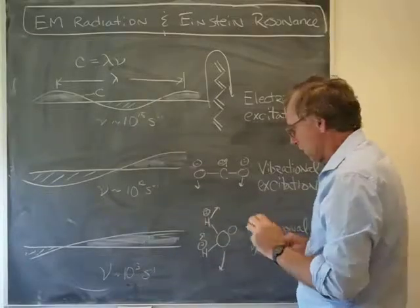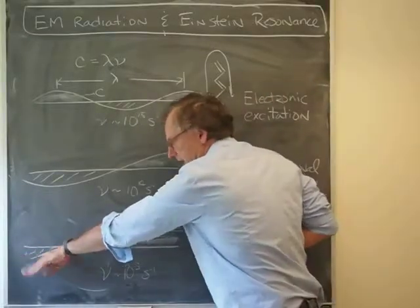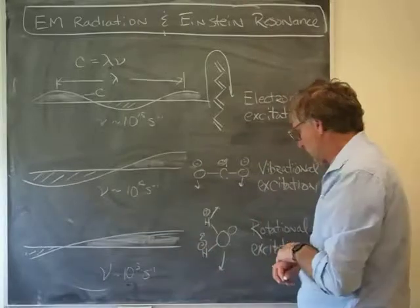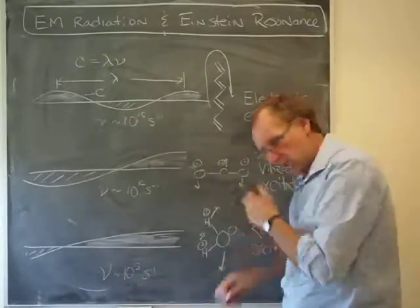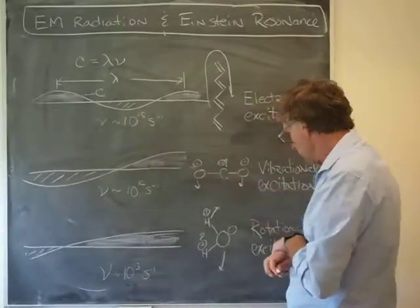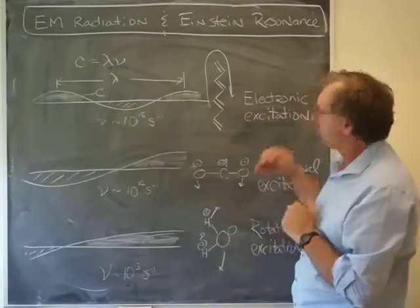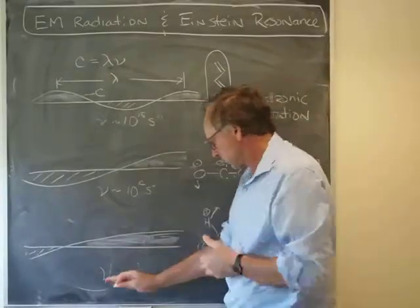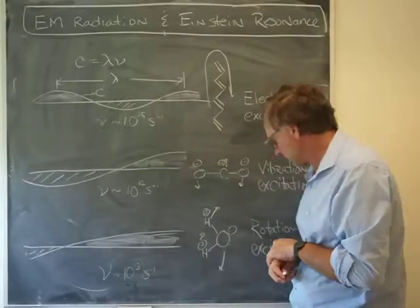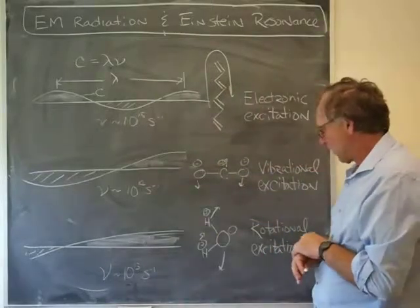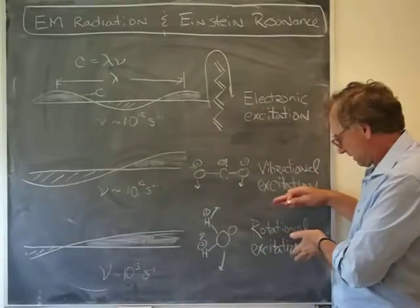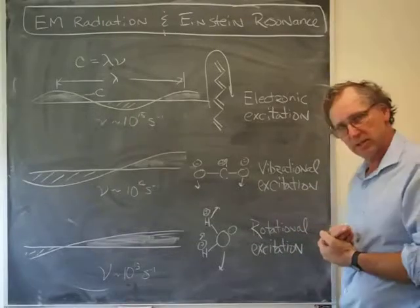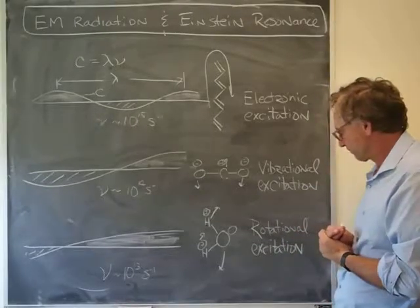And start to drive rotations. So we have Einstein resonance between light on the order of frequency of 10 to 13 cycles per second when it's trying to drive rotational excitations in a molecule.